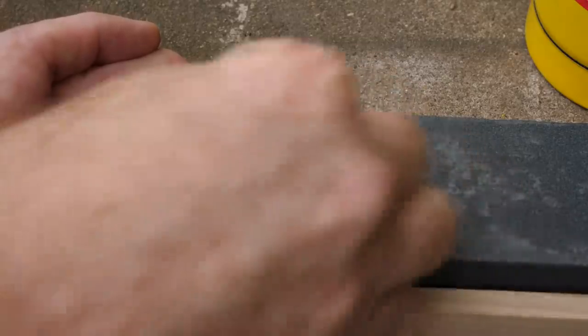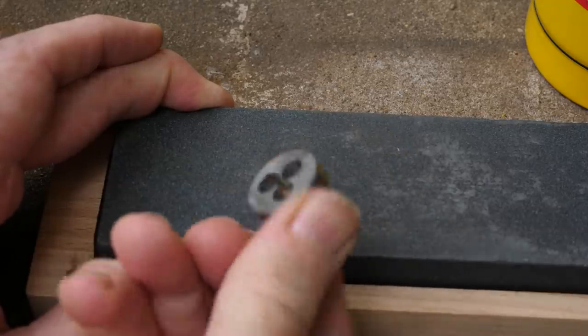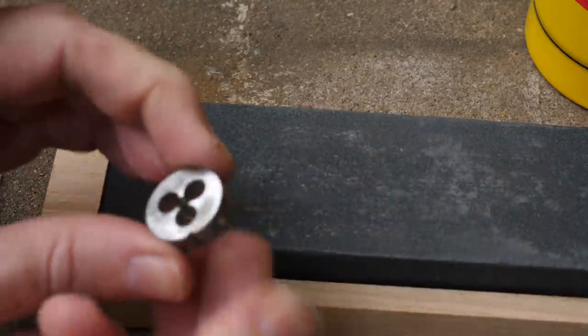Tempering by eye requires a clean metal surface, so I stoned one side of the hardened part to a bright finish. This bright surface should change to a straw yellow colour as the steel starts to temper, and for this tool that's where I'll remove the heat.